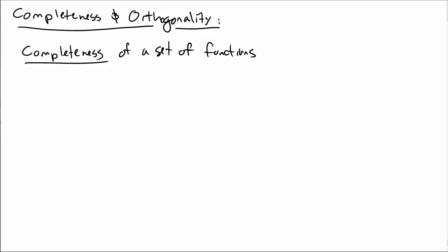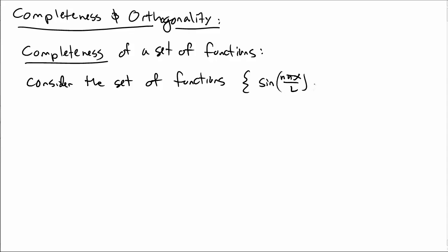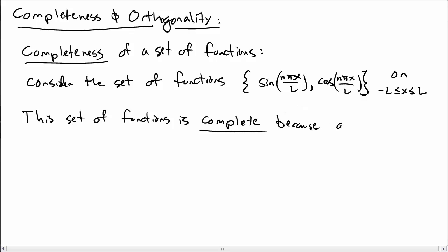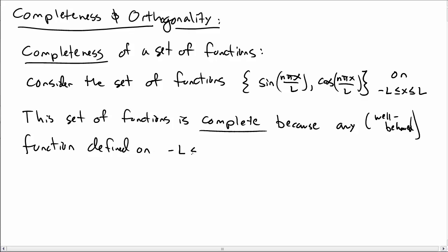The completeness of a set of functions — we say a set of functions is complete when we consider a set like sine of nπx/L and cosine of nπx/L in the region between x = −L and L. We say this set is complete because we can take any well-behaved function — it shouldn't have any crazy singularities — defined on the same interval between −L and L, and expand it as a sum of cosines and sines.